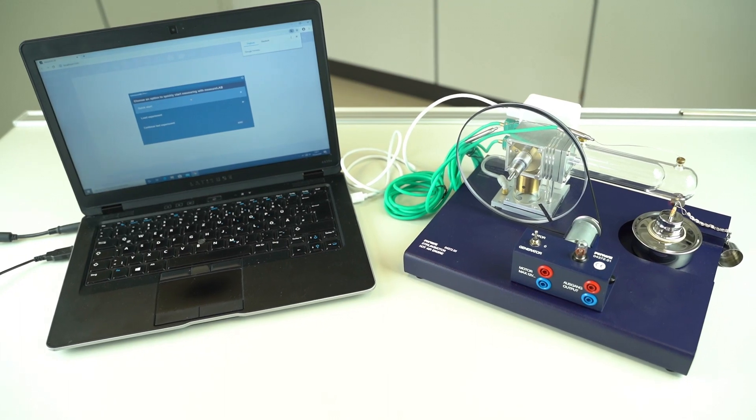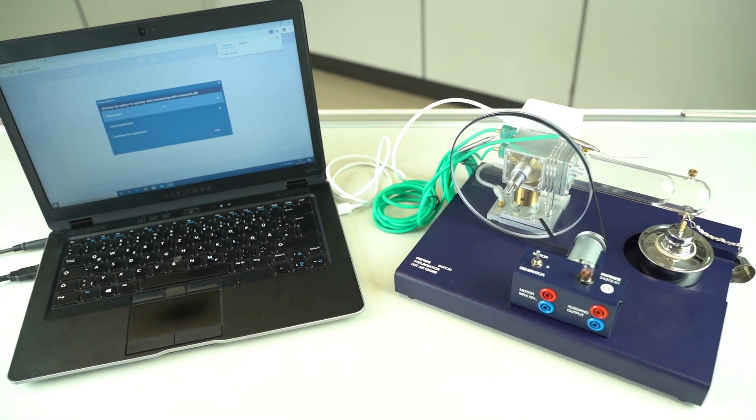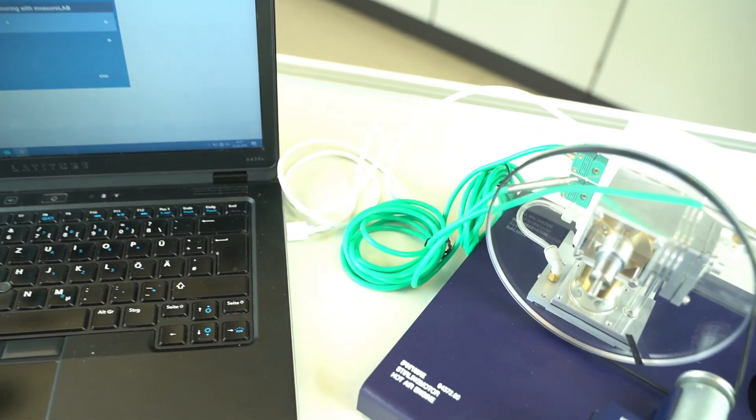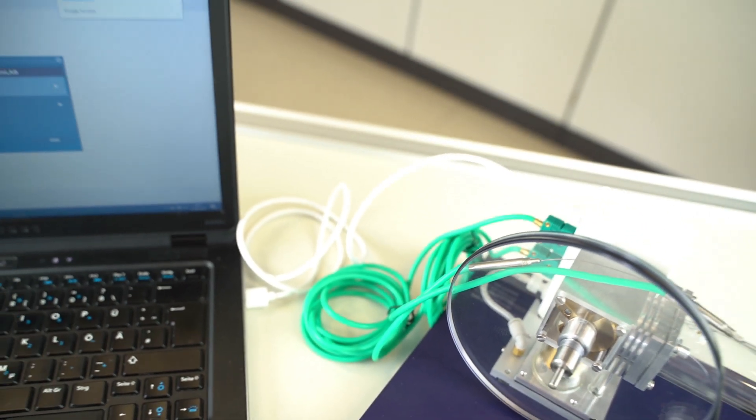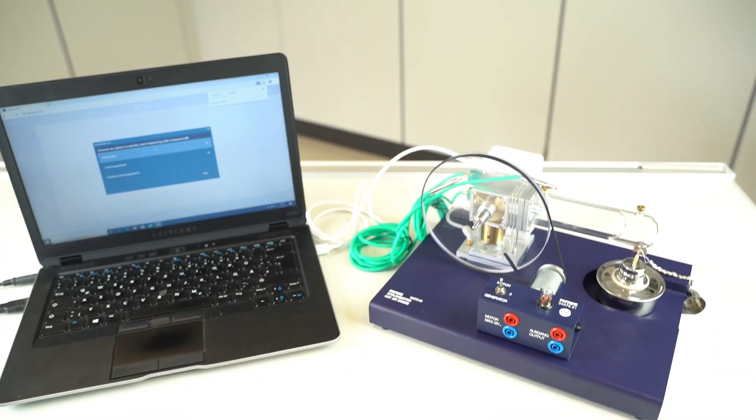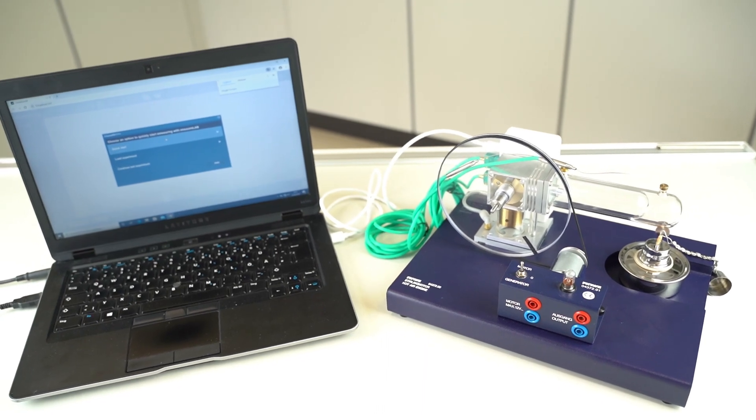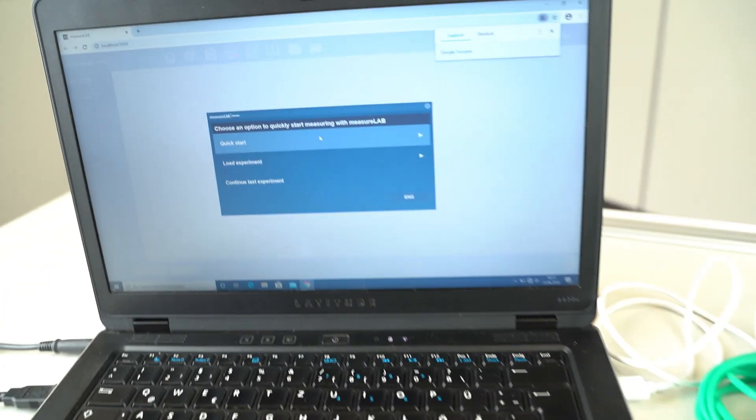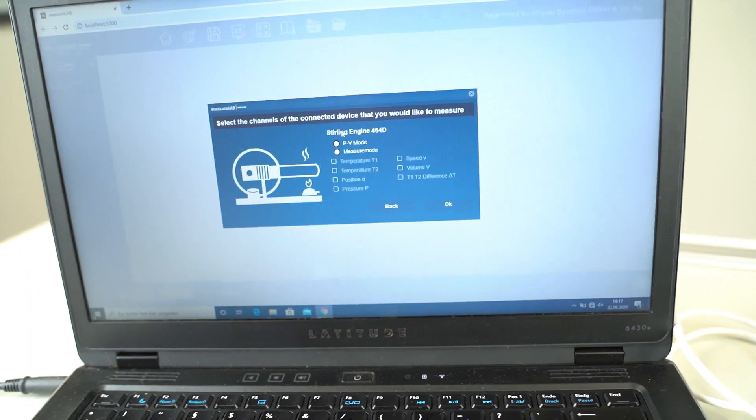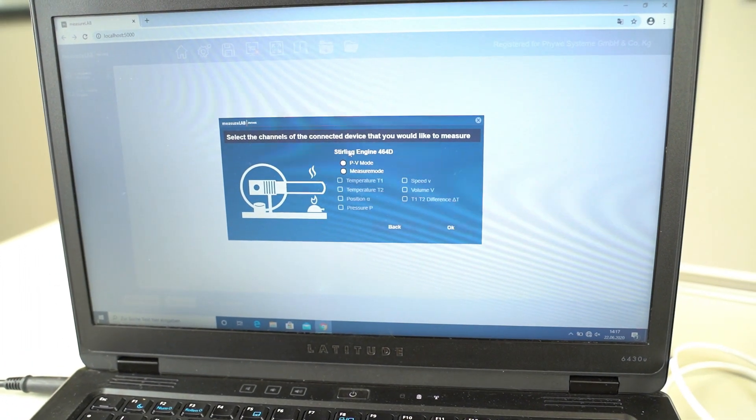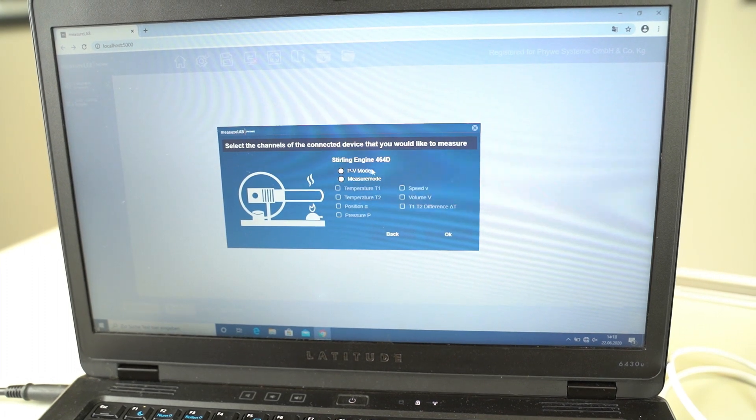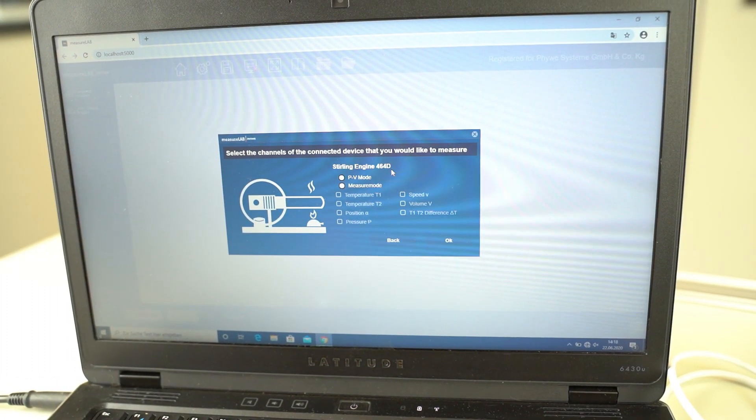In order to proceed with the measurement start the MeasureLab software on the computer and easily connect the module with the computer via USB. We choose the quick start option in the software and the software will automatically detect the module. We get different measurement options to choose from.